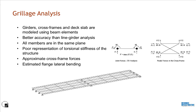Grillage analysis is the second type of FEM analysis. In this method, a grid of girders, cross-frames, and deck slabs is created in a two-dimensional frame. All members are defined using beam elements. Due to the presence of cross-frames and deck slabs as transverse members, there is interaction between girders, which simulates better structural behavior than line girder analysis. However, since all members are in the same two-dimensional plane and the depth of the structure is missing, torsional stiffness is still not represented very well. Also, since cross-frames are modeled using a single beam element, post-processing and approximation are still necessary to obtain individual cross-frame member forces.